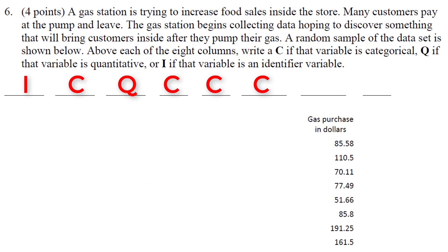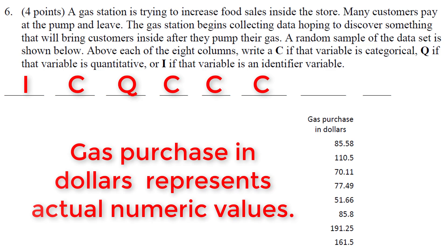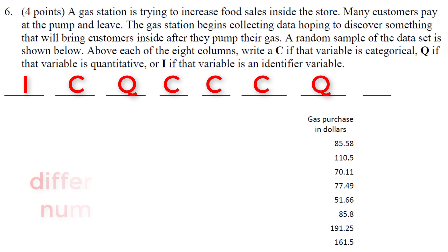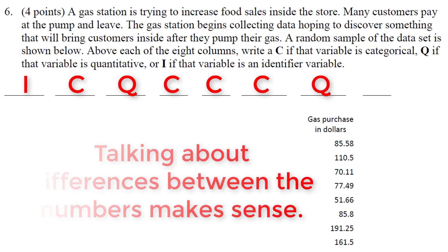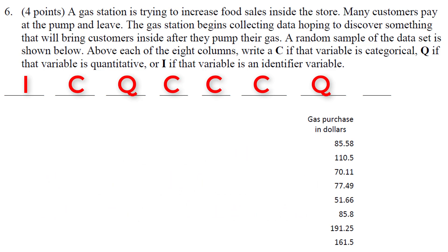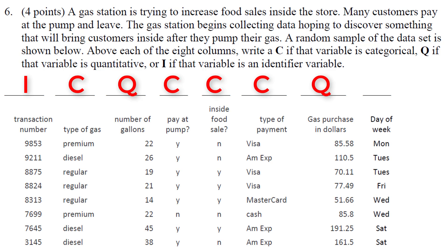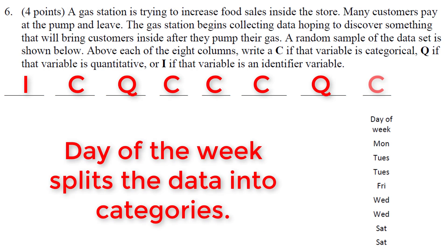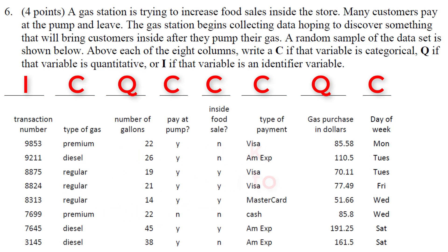Next we have gas purchase in dollars — would this be quantitative? Yes, because the person who paid $85.58 paid less than the person who paid $110.50 — and these are some expensive gas purchases. Finally, we have day of the week, which is categorical because it can repeat — it's not an identifier. There are multiple observations on Monday and Tuesday. Identifiers will only appear once in your data set and would identify a row.